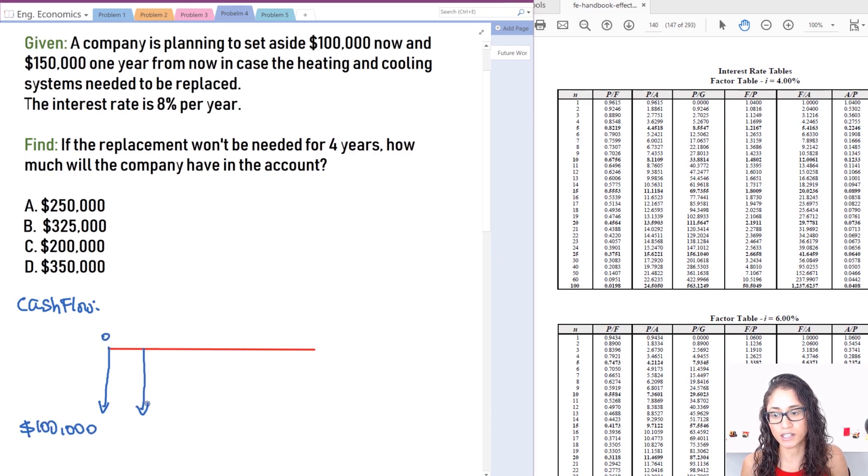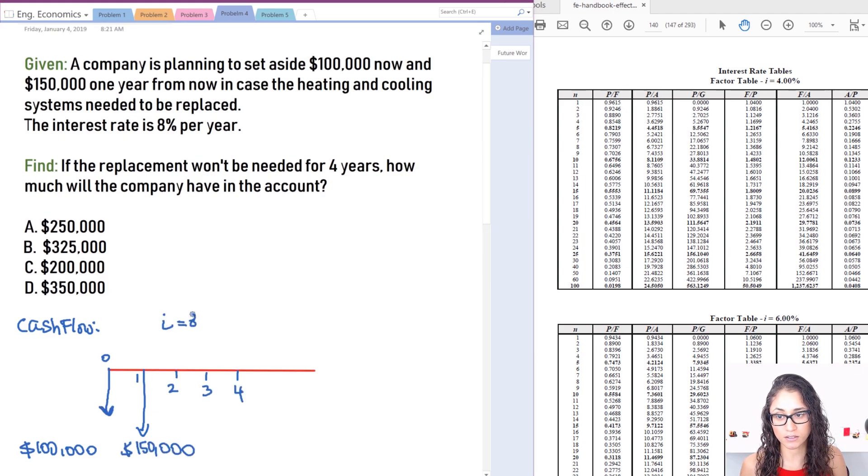Now at year one, which is next year, we're going to deposit $150,000. So we have an interest rate of 8%, and we want to find this value, the future worth value, four years from now after depositing these two values right here.